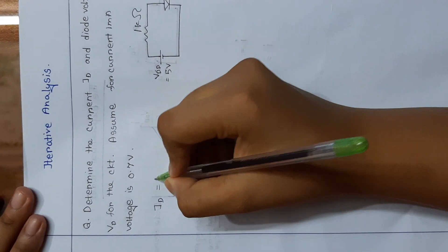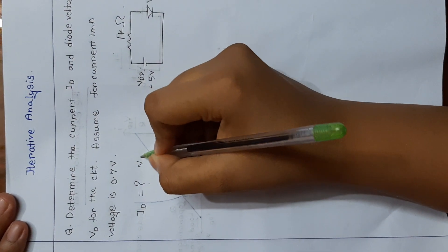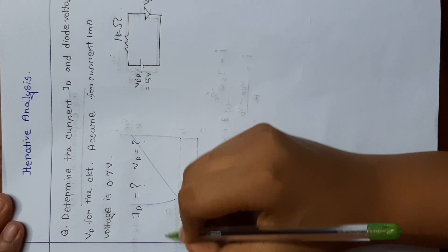So we have to identify the diode current Id and Vd. So how can we solve this?